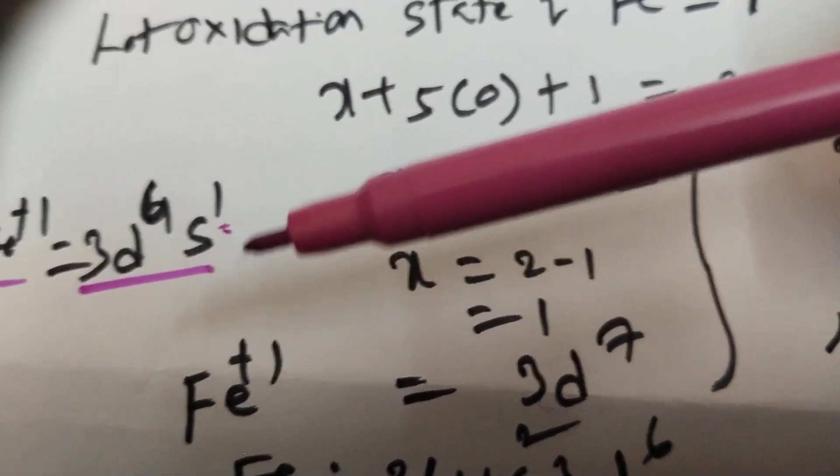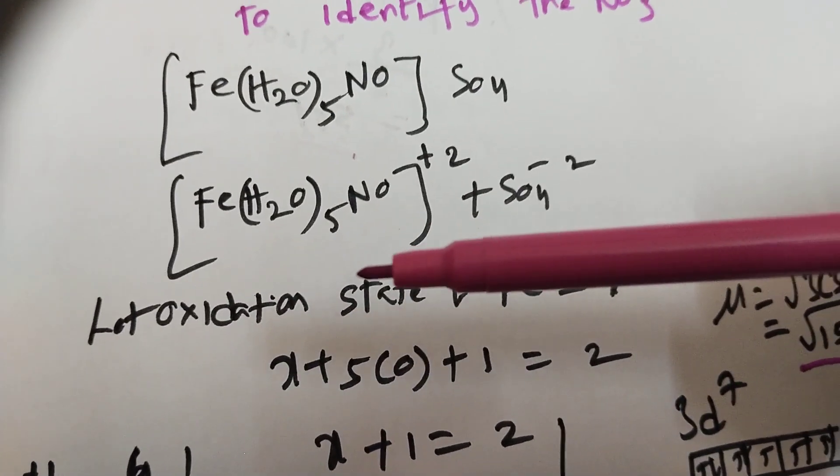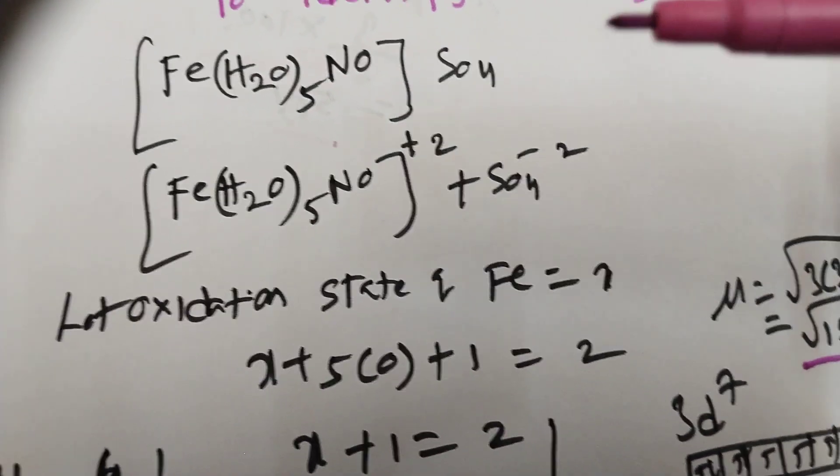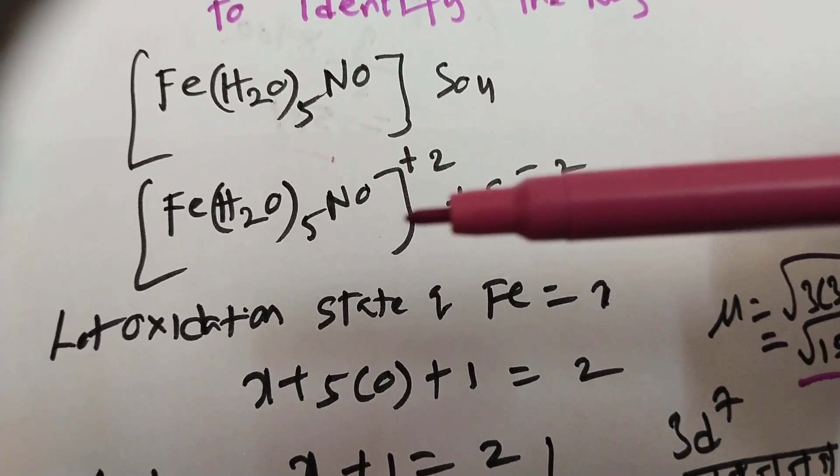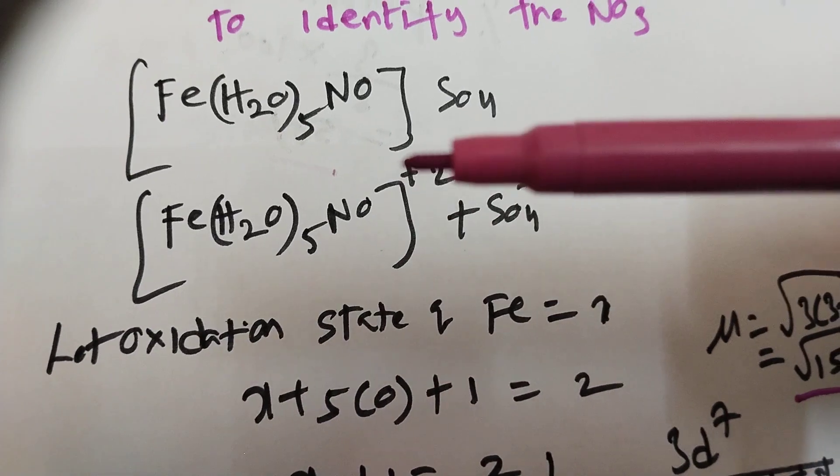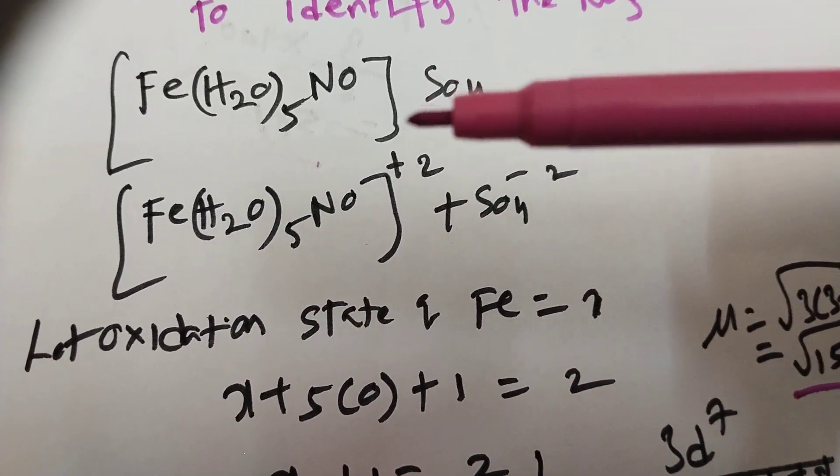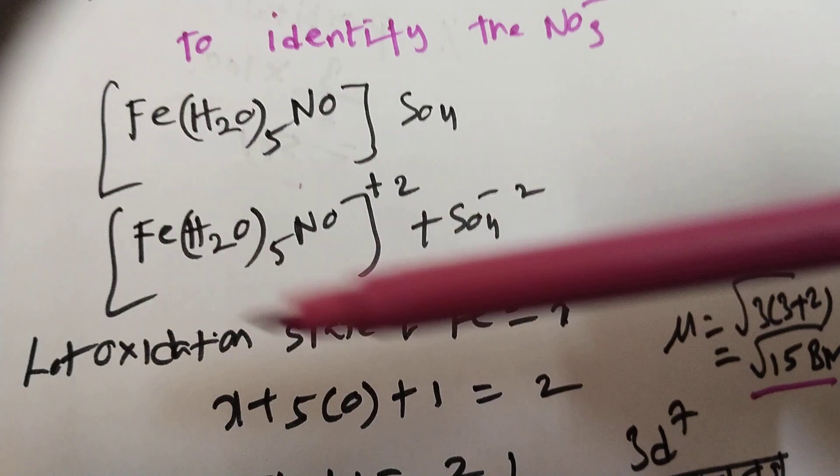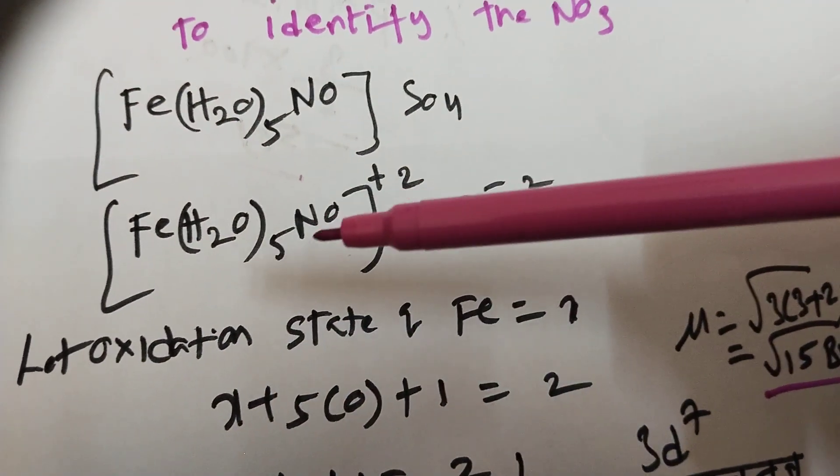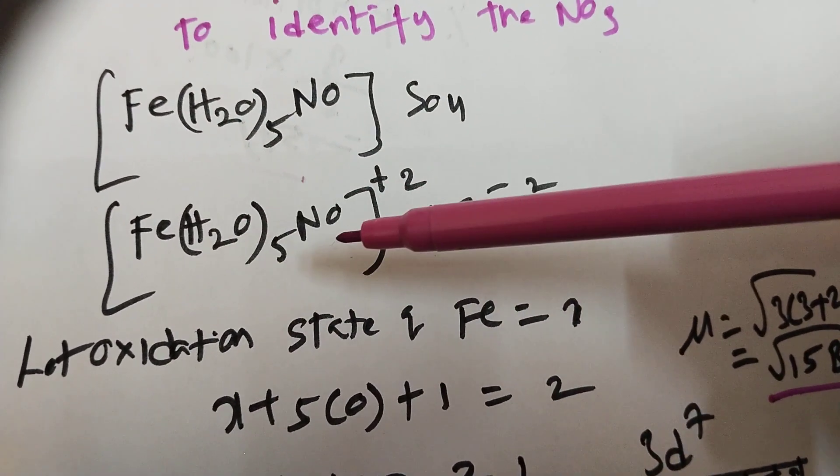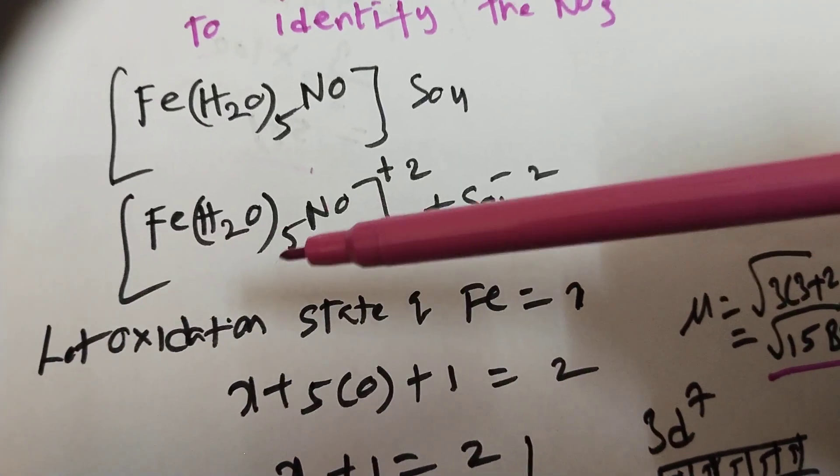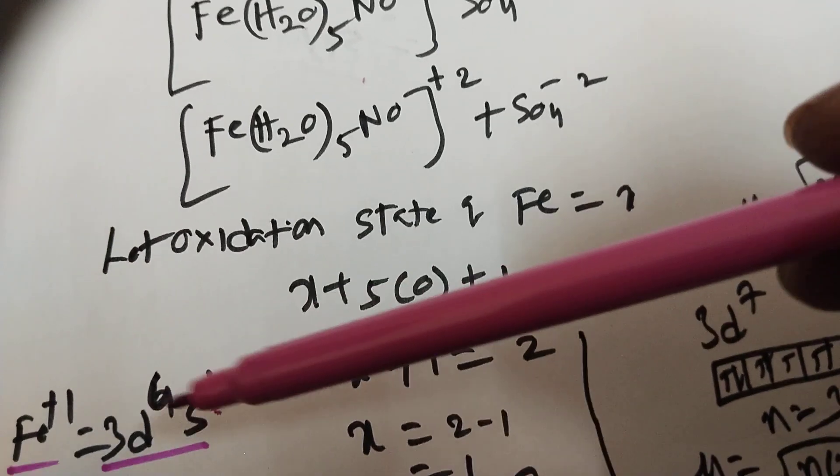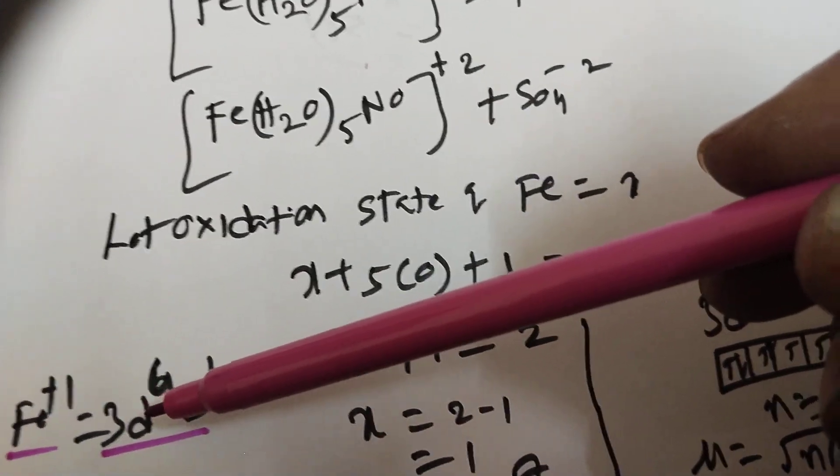Again, here s-orbital is over. Now in this complex, if you see, 4s orbital empty, 4p empty, 4d empty. So 4s we can accommodate. 4s orbital is over, total SP3D2. Here 6 ligands are there, this is 5, this is 1.